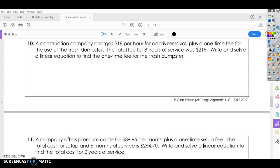So if I rent a canoe for 7 hours, it's going to cost me $104. So you would have actually another ordered pair there if you wanted to write it that way. But your answer would be $104 to answer the question here. Let's look at another example. So number 10, a construction company charges $18 per hour. Again, that's our slope, $18 per hour for debris removal, plus a one-time fee for the use of a trash dumpster. The total fee for 8 hours of service was $219. Again, the amount of time spent is independent. The amount it costs depends on how many hours it took. So that is our 8 hours would be our independent variable. $219 is our dependent.